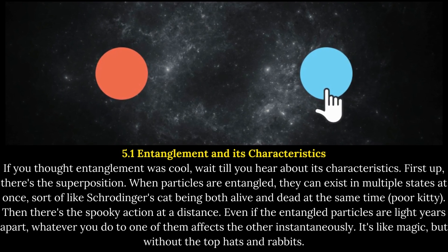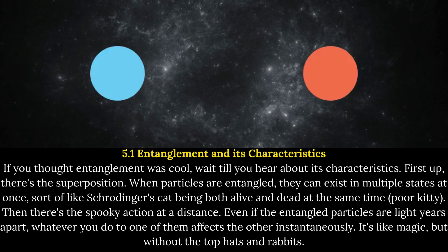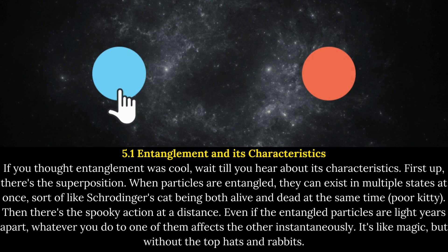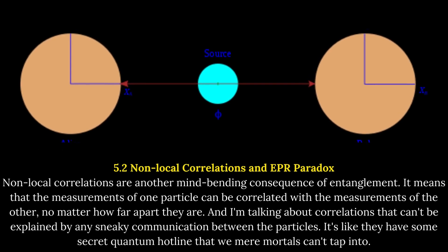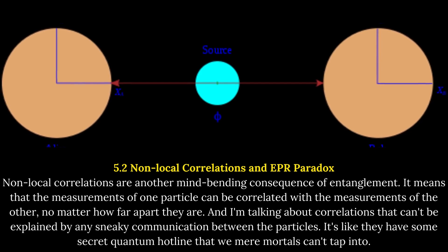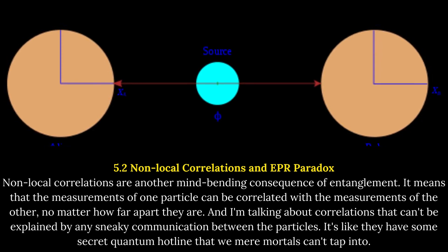When particles are entangled, they can exist in multiple states at once — sort of like Schrödinger's cat being both alive and dead at the same time. There's also the spooky action at a distance: even if entangled particles are light years apart, whatever you do to one of them affects the other instantaneously. Non-local correlations are another mind-bending consequence of entanglement, meaning that measurements of one particle can be correlated with measurements of the other no matter how far apart they are — correlations that can't be explained by any sneaky communication between the particles. It's like they have some secret quantum hotline that we mere mortals can't tap into.